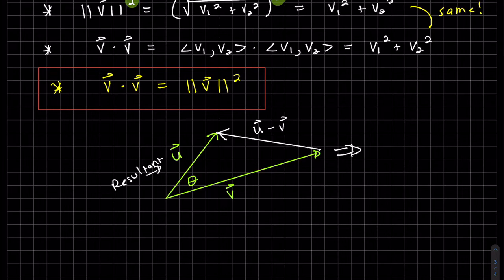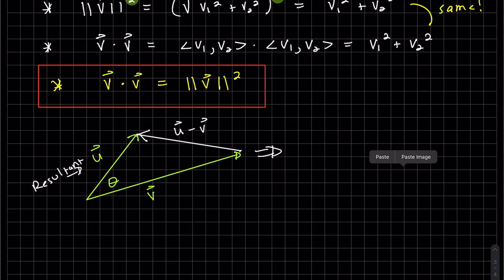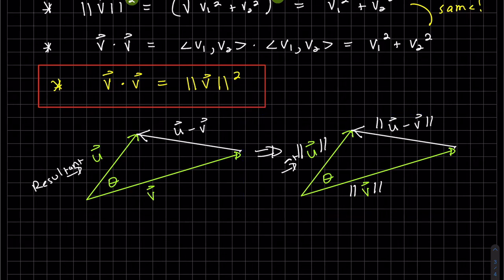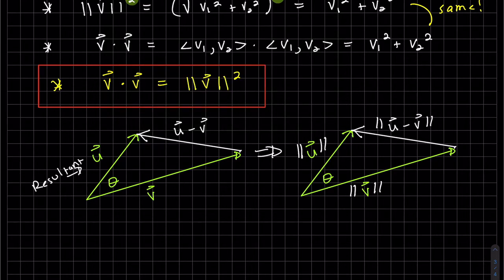Well, I'm going to change this to the lengths of it. So now that we have a triangle with distances, that's what these magnitudes are, I'm going to use the law of cosines.